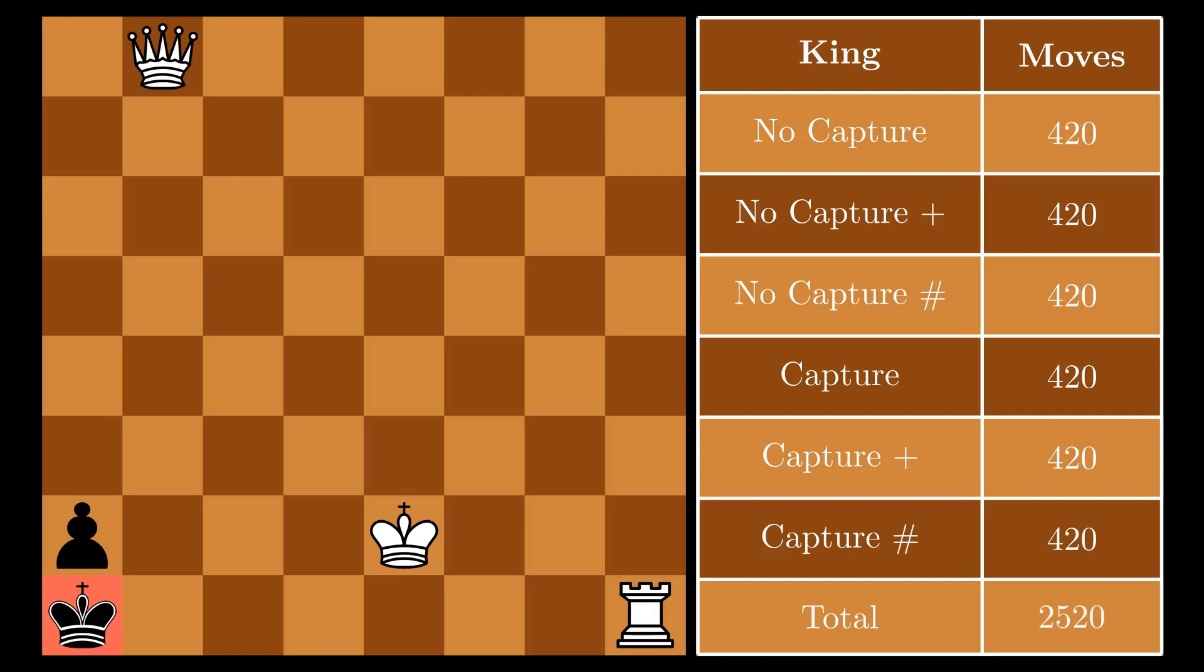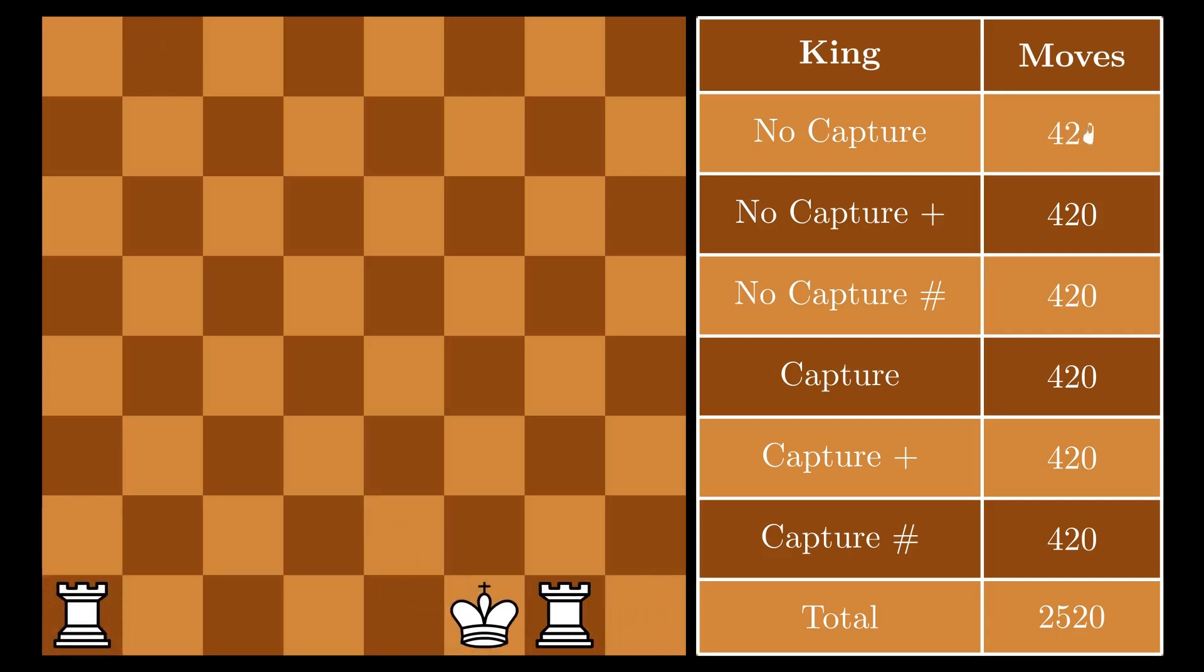If you thought I forgot about castling again I have good news for you, I didn't, and for simplicity we'll attribute it as a king move. Castling can be to the kingside or queenside and will never involve captures, so adding these 6 moves will bring the total up to 2,526.